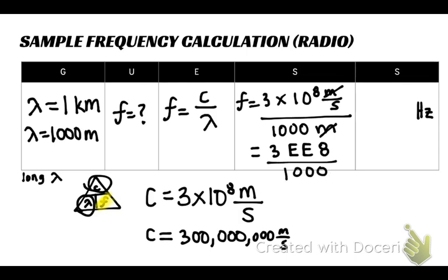So let me type this in, 3EE8 divided by 1, 2, 3, gives me 300,000 hertz for my frequency of radio waves.